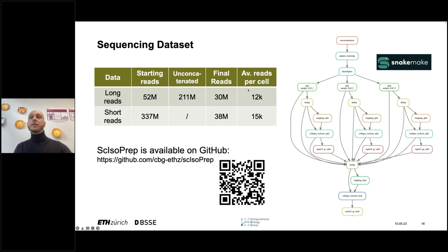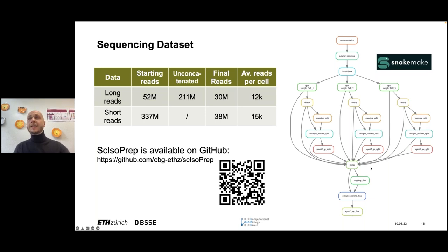This dataset was so large that the usual IsoSeq tools were not able to process it. So I had to create my own Snakemake pipeline, available on GitHub, which divides the workload per cell, integrates multiple samples simultaneously, and produces one unified isoform library at the end. Let's now look at what the data looks like.